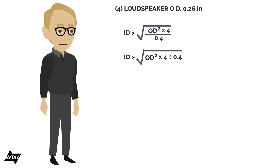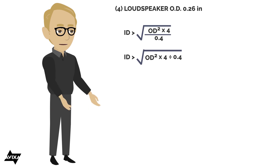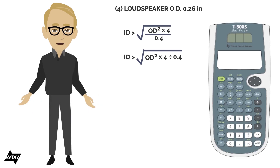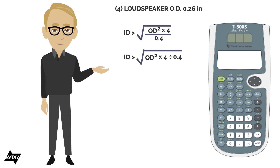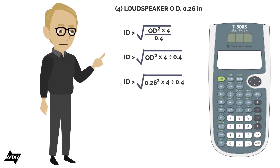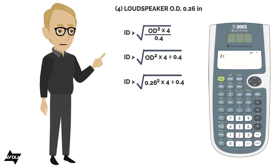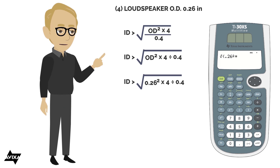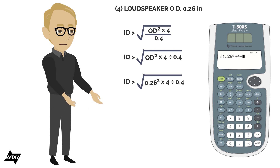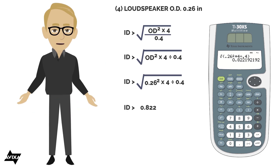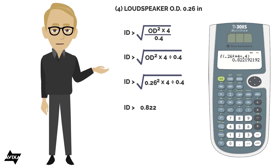Let's look at this in the light of PEMDAS. Outer diameter squared — it does the exponent first. This is all multiplication and division, so it follows left to right. I need to make sure everything is completed before I take the square root. So the entry is: square root of (0.26 squared times 4 divided by 0.4). Opening the square root function, entering 0.26, squaring it, multiplying by 4, dividing by 0.4, and closing the parenthesis. This tells me I need a conduit with an inner diameter larger than 0.822.